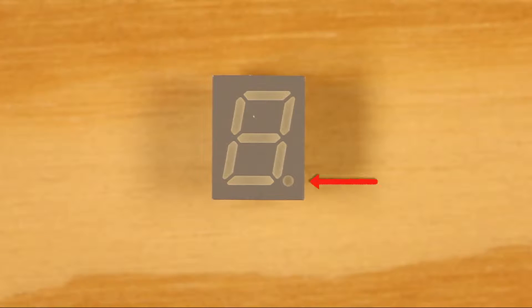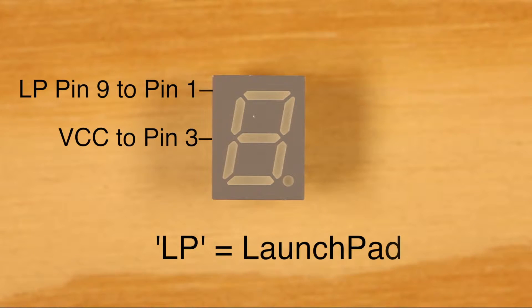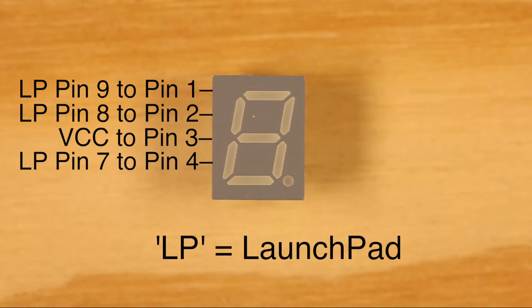Orient the segment display so that the decimal is on the bottom right. Connect VCC to pin 3 on the segment display's left side. On the left side of the segment display, connect the top pin 1 to pin 9 on the Launchpad, pin 2 to pin 8 on the Launchpad, pin 4 to pin 7 on the Launchpad, and pin 5 to pin 6 on the Launchpad.